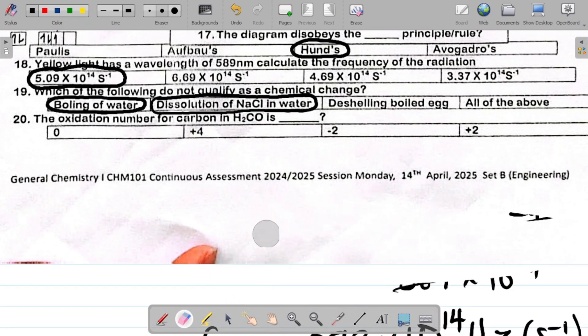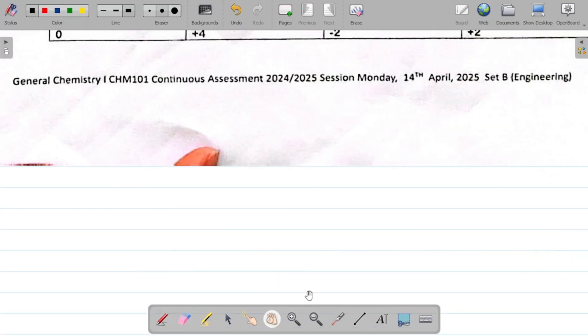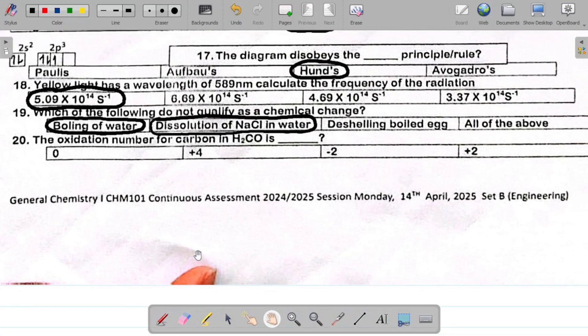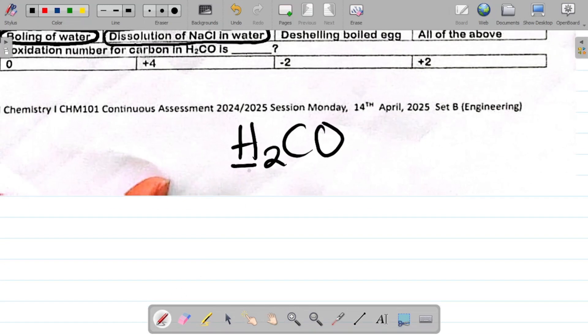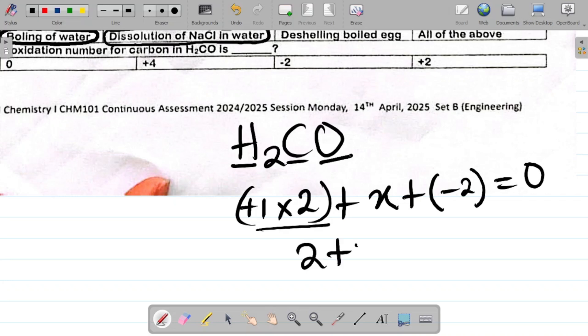Question 20 says the oxidation number of carbon in H2CO is. So I have H2CO. We are asked to find the oxidation number of carbon here. First things first, for hydrogen, the oxidation number of hydrogen is plus one, multiplied by the number of atoms, is 2. So it becomes 2. Plus, coming to carbon, we assume we don't know it. So we call it X. Plus, for oxygen, the oxidation number is minus 2. We equate this to 0. 1 times 2 is 2, plus X, plus minus is minus 2. It's equal to 0. From here, 2 minus 2 cancels out. So X is equal to 0.